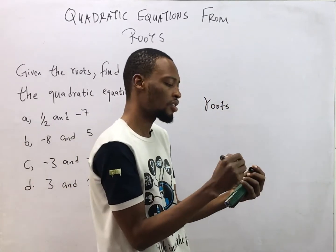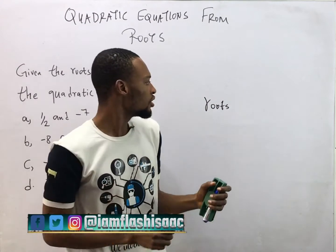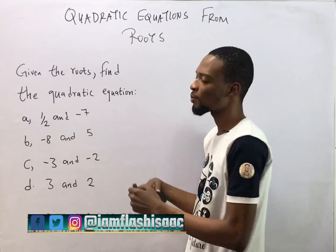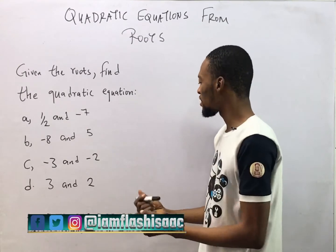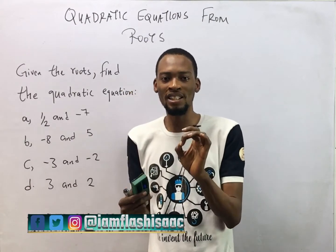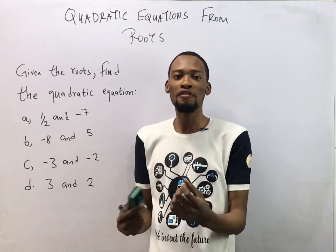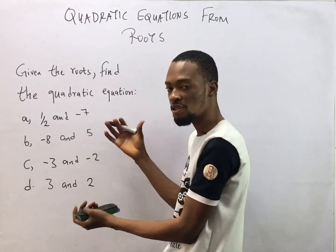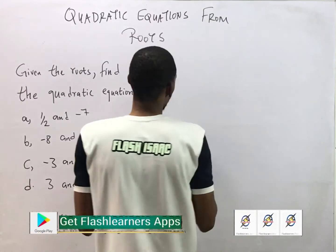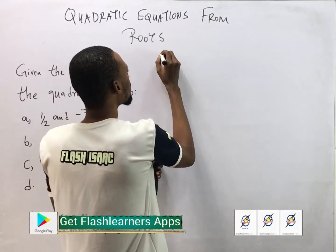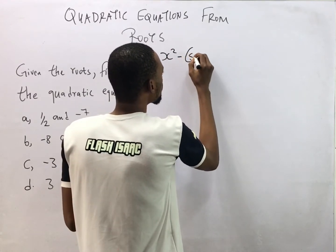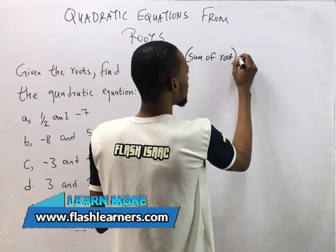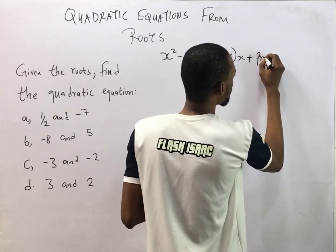In some cases, which is very popular nowadays, you'll be given the roots of the quadratic equation and asked to derive the equation. The good news is that it is even easier to derive a quadratic equation from roots. All you need to do is substitute into this formula: a quadratic equation is simply s² minus sum of roots times s plus product of roots.